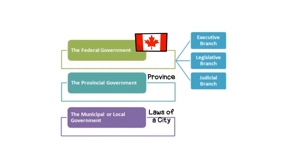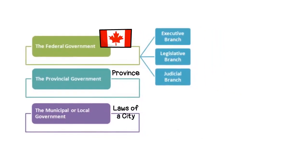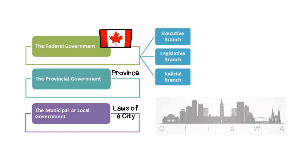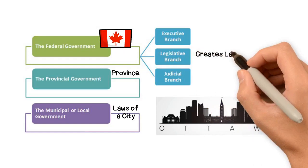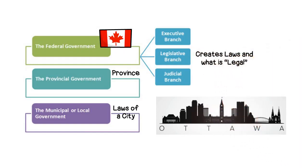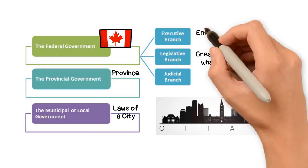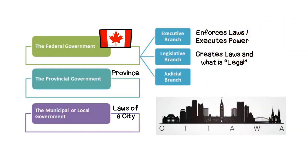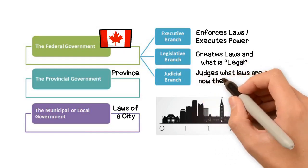The federal government has three different branches — three to ensure that one of them doesn't hold too much control and/or power. These are all headquartered in our nation's capital, Ottawa, Ontario. These three branches can be broken into: Legislative, which creates laws and determines what is legal or illegal in Canada; Executive, the branch that enforces laws and executes power; and Judicial, where they judge what laws are and how they should be enforced.